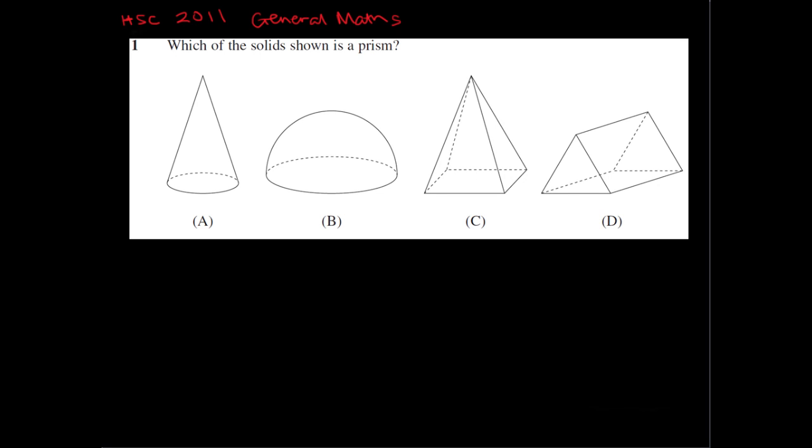Okay, so we're looking at the HSC 2011 general maths paper. Question 1 gives us a series of solids and we're asked which one of these - A, B, C, or D - is a prism.